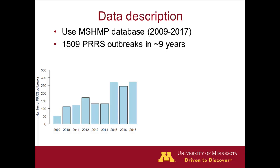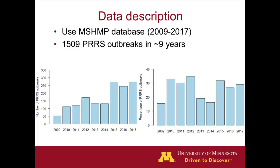We grabbed the entire database from 2009 to the end of 2017, which contains 1,500 outbreaks over nine years. This apparent increase is not due to a higher absolute number, because we also have a higher number of participants. When we correct the data by the farm population in each year, we can see the proportion is pretty much the same — with some years higher and some lower incidence. 2013 and 2014 were among the lowest, coinciding with the PED epidemic.